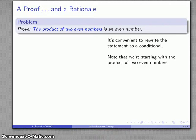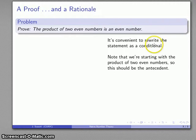To figure out what that conditional is, I note that I'm starting with the product of two even numbers. What I have is two even numbers and I'm finding their product. Because that is the thing I'm starting with, this should be the antecedent. This is the part of the conditional that follows the if portion of the statement.